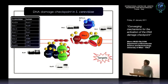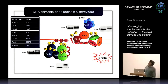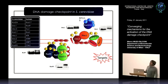We can monitor the whole signaling cascade by looking at the phosphorylation status of the different players. Once we get hyperphosphorylation of RAD53, we interpret this as a sign that the checkpoint is fully active.